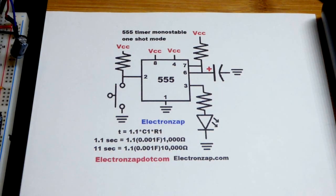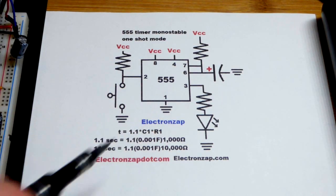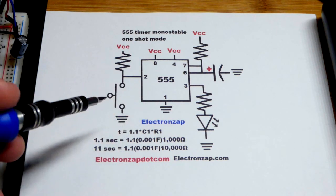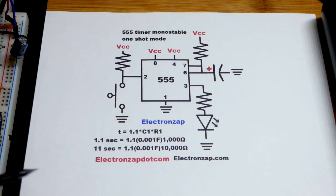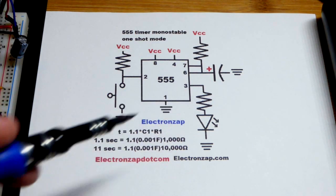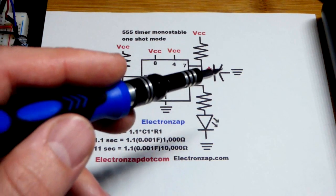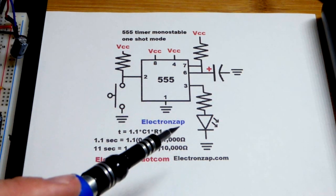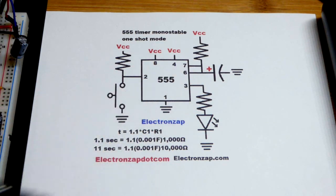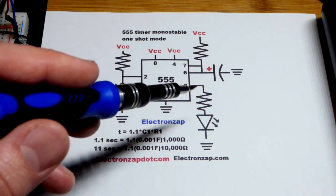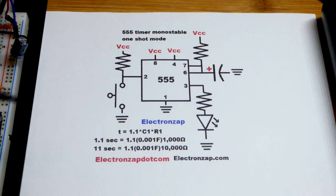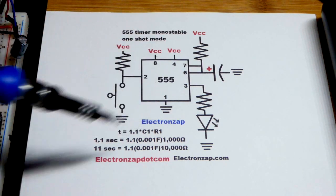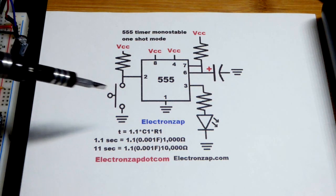Now in this video we're going to build the 555 timer in monostable mode. What this does is when we close the switch, it sets the output high and lets the capacitor charge. Once the capacitor charges to two-thirds of the power supply voltage, then the capacitor discharges while the output goes low and it stays that way. Current keeps going through the resistor to ground until we press the button again.